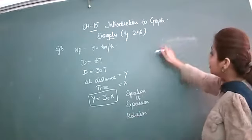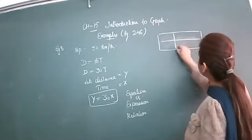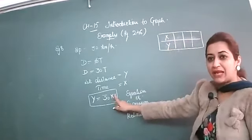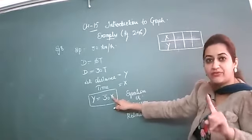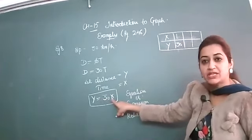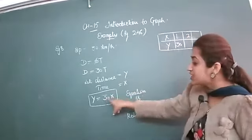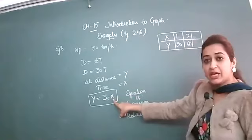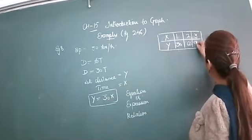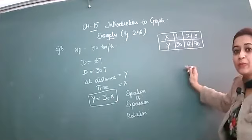For the graph you need three values for x and three values for y. Let's draw this table: x and y. If x equals 1, y is 30. If x equals 2, y is 60. If x equals 3, y is 90. So this is your table and for these three values you will plot the graph.